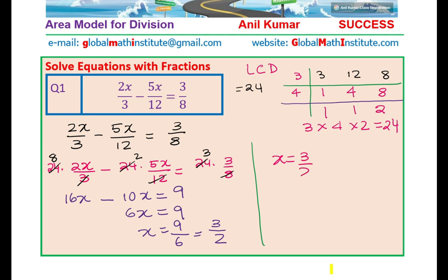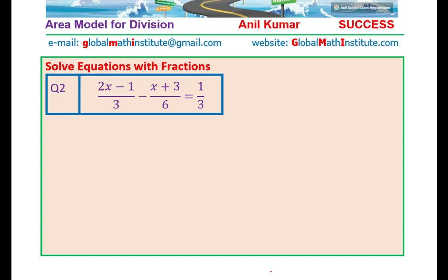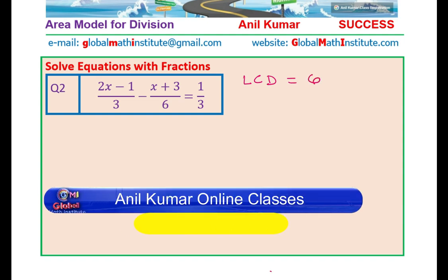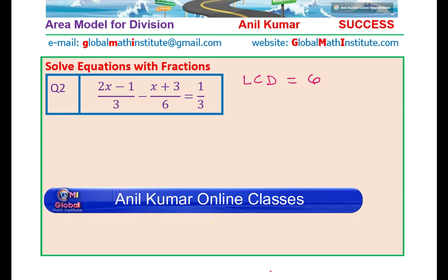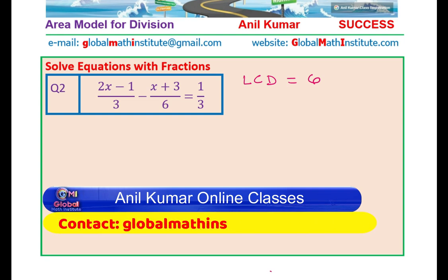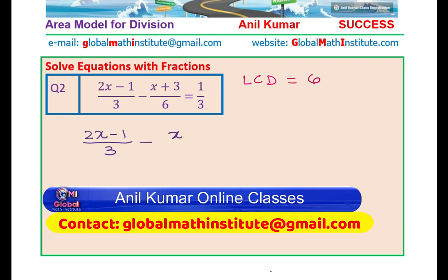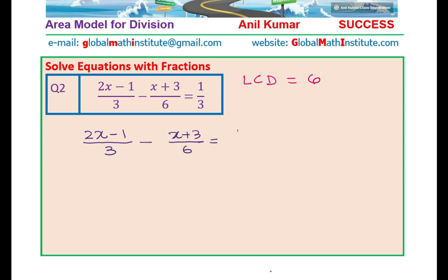I hope you understood the process. We are going to apply this strategy across all 6 questions. Question number 2: the denominators are 3, 6, and 3, so clearly the lowest common denominator is 6. The equation is: 2x minus 1 over 3, minus x plus 3 over 6, equals 1 over 3. Each term is going to be multiplied by 6.